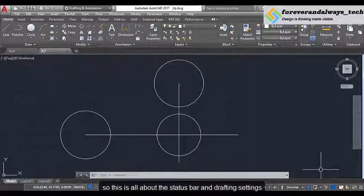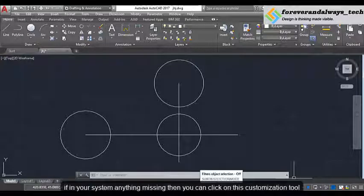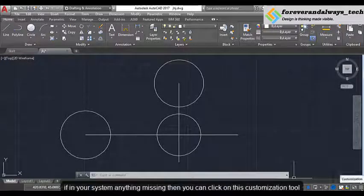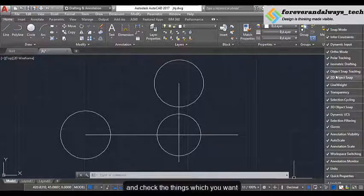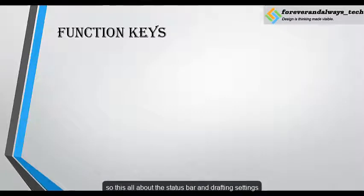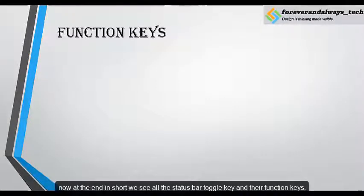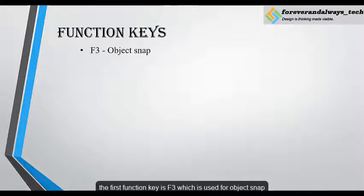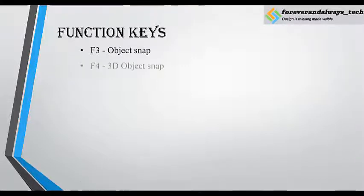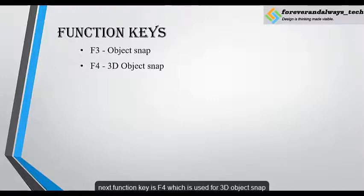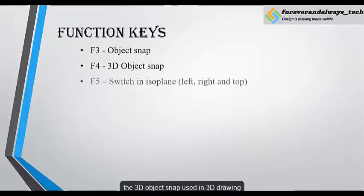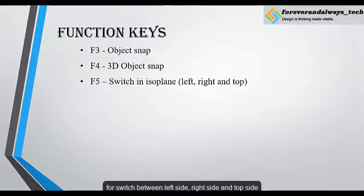So this is all about the status bar and drafting settings. If anything is missing in your system, click on the customization tool and check the things which you want. Now at the end we will see all the status bar toggle keys and their function keys. The first function key is F3, which is used for object snap — object snap is used to find the snap point of any object. Next function key is F4, which is used for 3D object snap, used in 3D drawing. Next function key is F5, which is used for the isometric plane to switch between left side, right side, or top side.